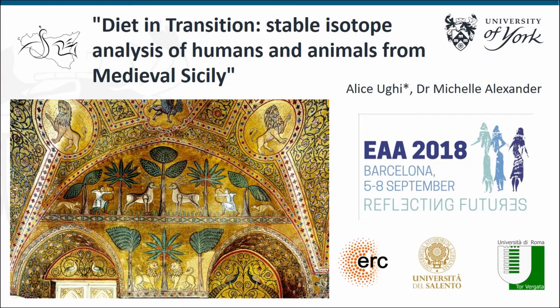Thank you for having me. My name is Alice Woogie and I'm a PhD student. My supervisor is Michelle Alexander. My project is inserted in a broader multidisciplinary project, and the aim of my research is to better describe social, economic, and demographic changes through changes in regimes in Sicily between the 13th and the 16th century AD. Today I'm going to present preliminary data of bulk carbon and nitrogen stable isotope analysis done on humans, animals, and plant remains, but I'm going to present only the humans and animals.